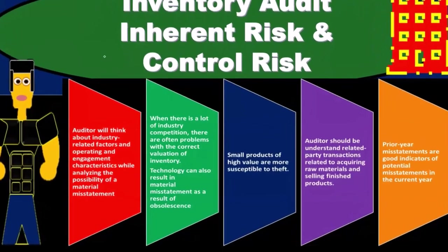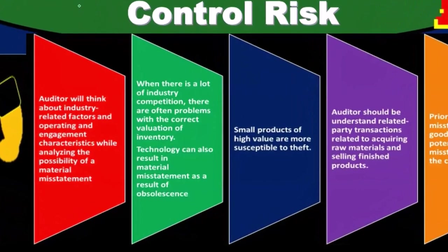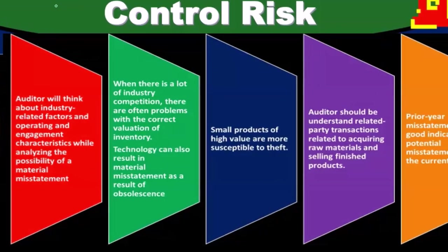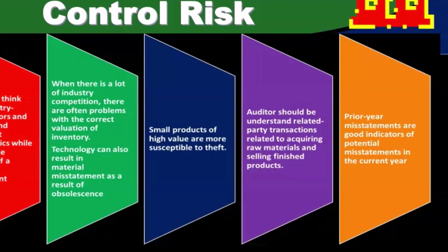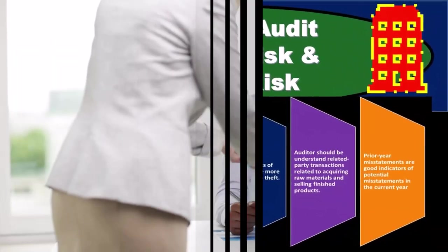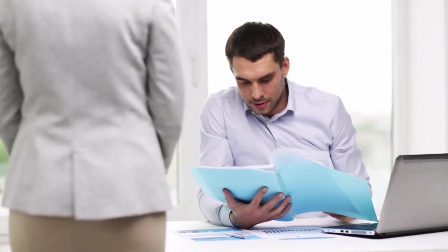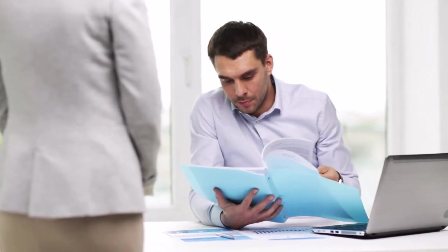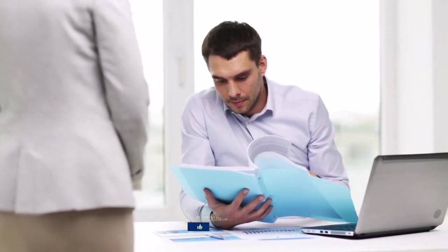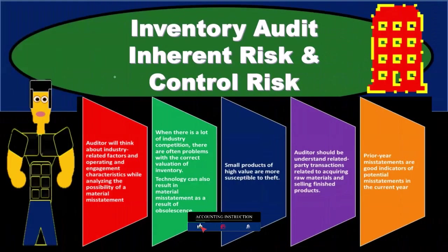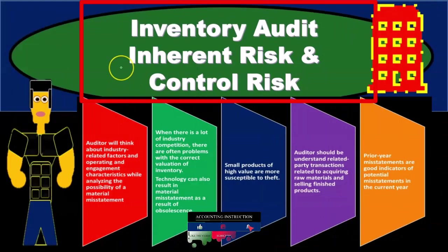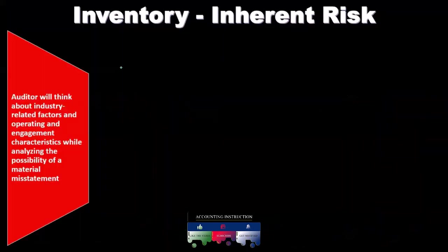We're going to assess the control risk, and then we're going to use those for the detection risk process. Remember that inherent risk and control risk are essentially outside of the auditor's control — those are things that are managed or decided on by the company. We will take those risks and determine the detection risk, which is what we do have control over through the amount of testing that we will do.